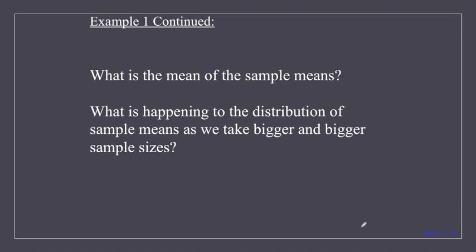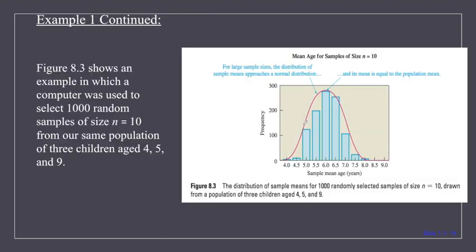What is the mean of our sample means, and what is happening to the distribution as we take bigger and bigger sample sizes? Let's say I take sample sizes of 10, drawing 1,000 random samples from children aged 4, 5, and 9. As we can see, the bigger our samples get, the graph approaches a normal distribution, and now our population mean is truly represented.